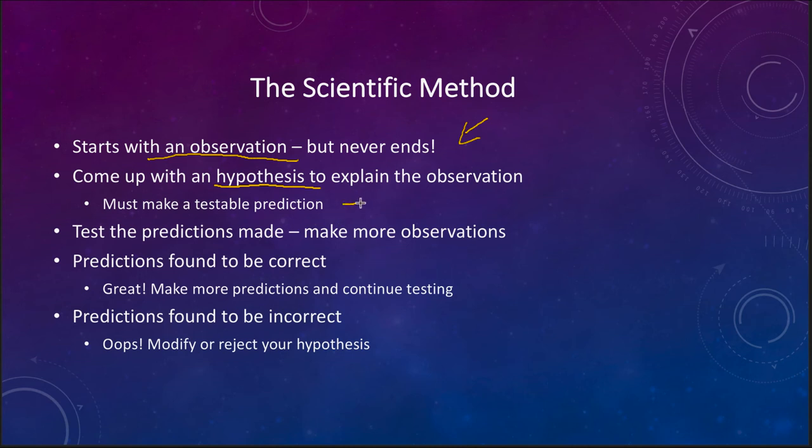As I mentioned before, the key is that it must make some kind of testable prediction, something that you can test. Once you do that, you test your predictions and make more observations. And then one of two things could happen.